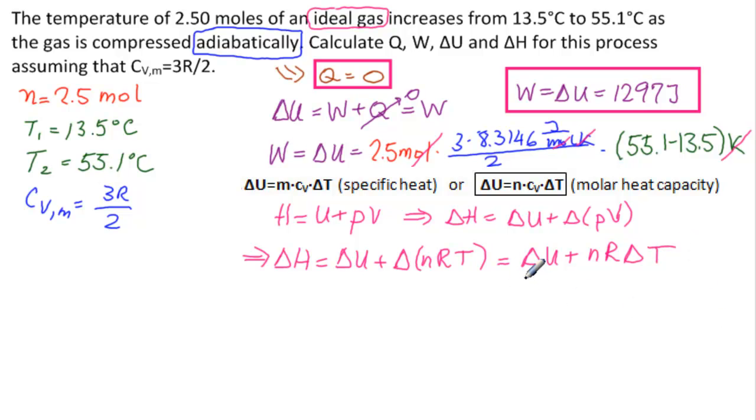And we have delta U, we have delta T, we have n, and we have R. So we're good to go. So we have delta H equals delta U is 1297 joules, and then plus n is 2.5 moles times R is 8.3146 joules per mole kelvin. And again, the difference in the temperatures, which is 55.1 minus 13.5.